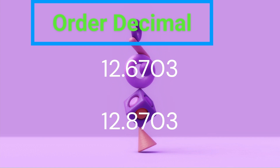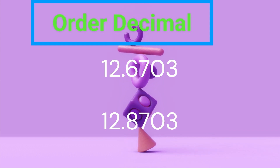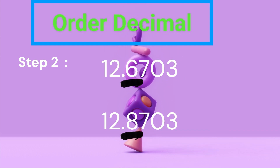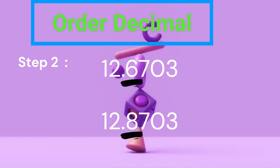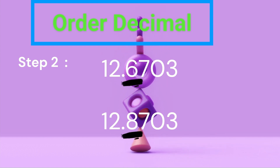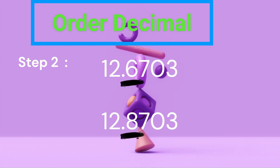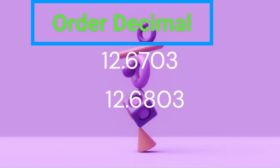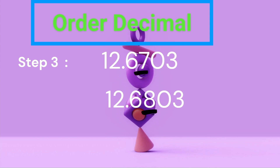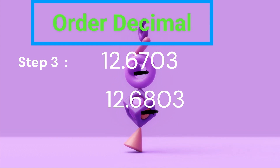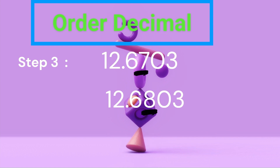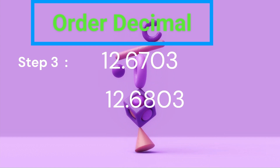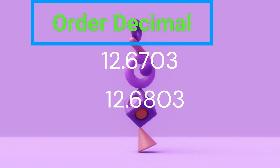If the whole numbers are the same, you move on to compare the digits after the decimal point. Step 2: Compare tenths. If the whole numbers are the same, compare the digits in the tenths place. The tenths place is the first digit immediately to the right of the decimal point. A larger digit in the tenths place means a larger decimal. If the tenths digits are the same, move to the hundredths place. Step 3: Compare hundredths. Compare the digits in the hundredths place — the second digit to the right of the decimal point. A larger digit in the hundredths place means a larger decimal. If the hundredths digits are also the same, continue to the thousandths place.